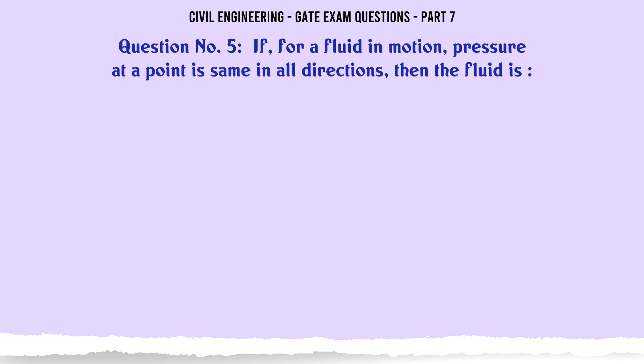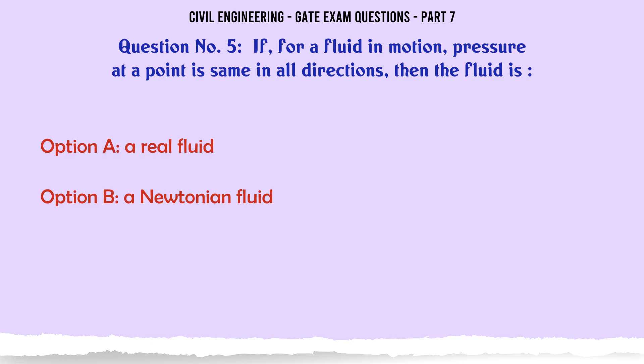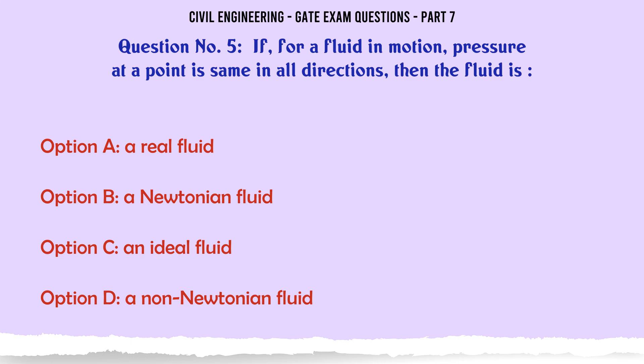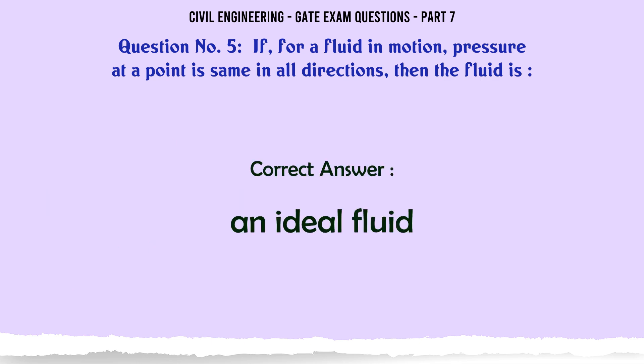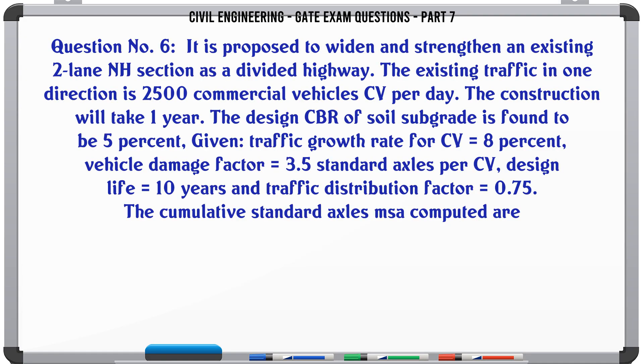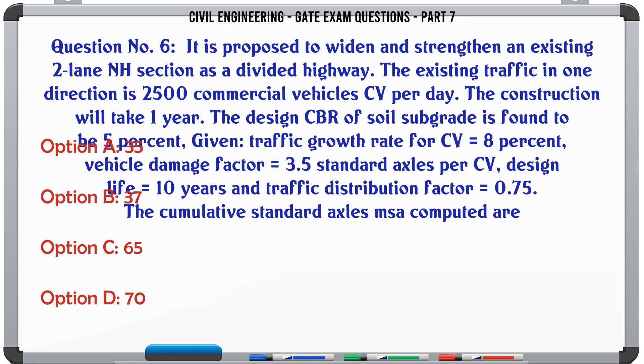If for a fluid in motion, pressure at a point is same in all directions, then the fluid is: A) a real fluid, B) a Newtonian fluid, C) an ideal fluid, D) a non-Newtonian fluid. The correct answer is an ideal fluid.